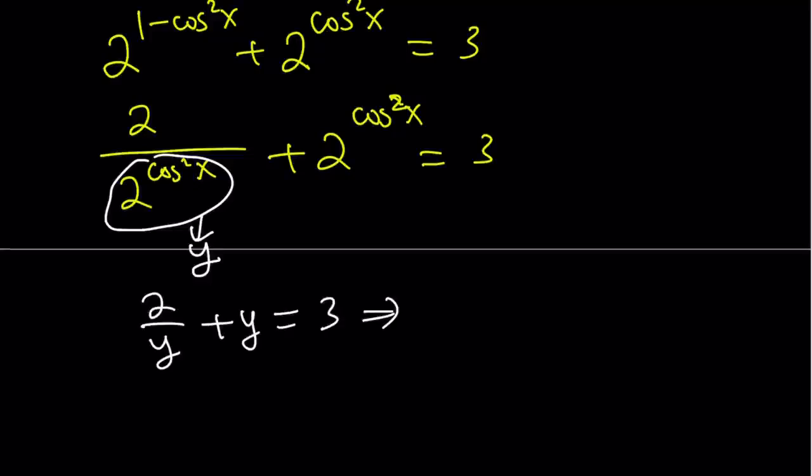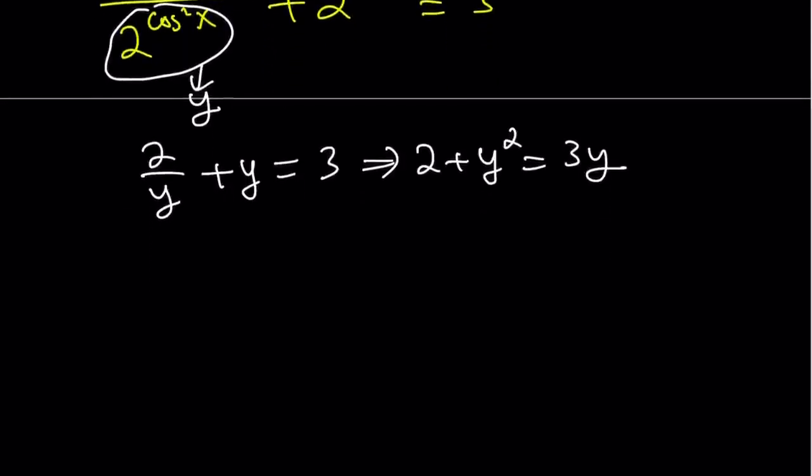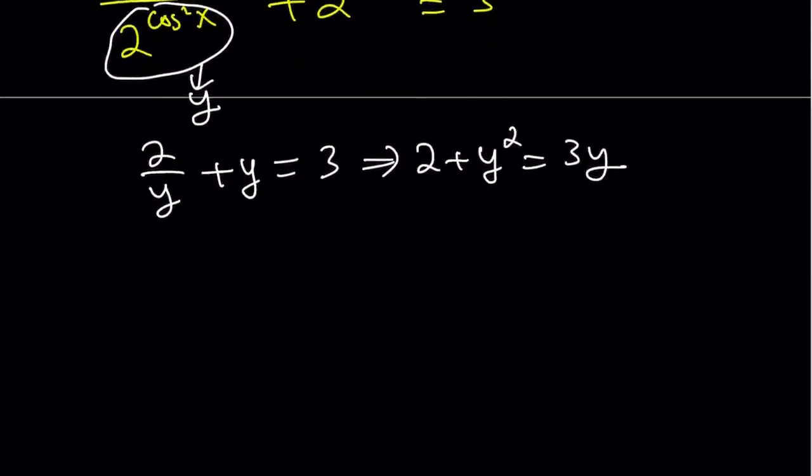2 over y plus y equals 3. Now we know that y cannot equal 0 because 2 to the power something can never equal 0. And in this equation, obviously, y equals 0 would not satisfy the equation. So we can multiply both sides by y. And that's going to give us 2 plus y squared equals 3y. It's better than making a common denominator, even though it's the same thing.